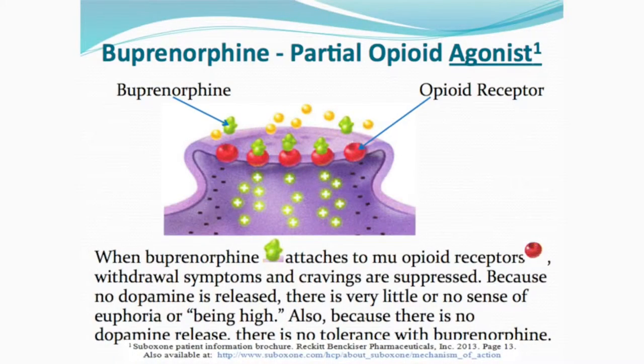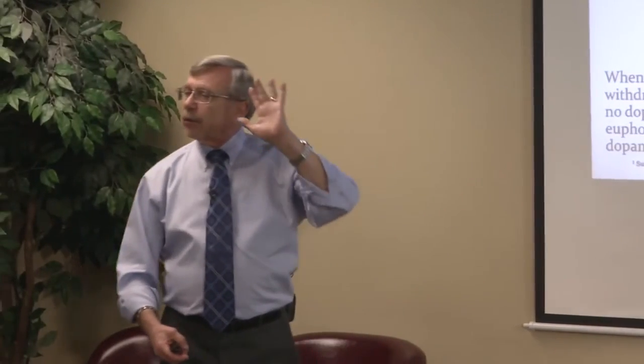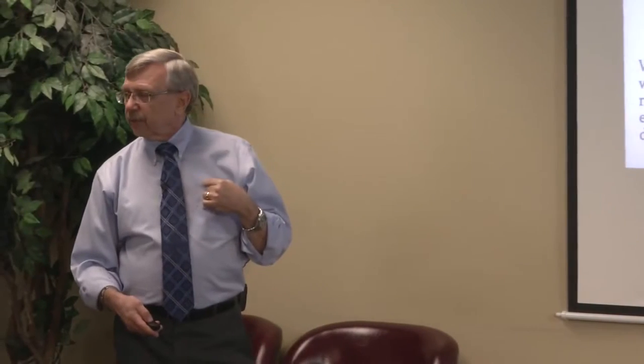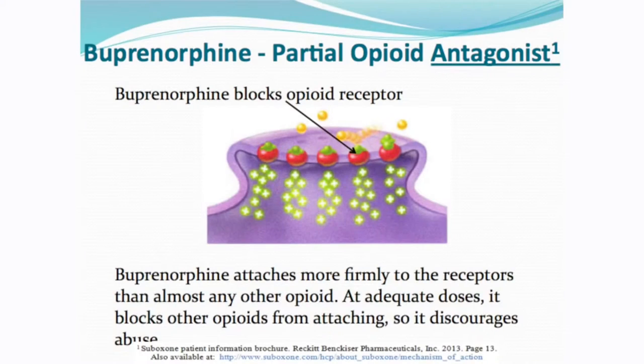Because there's no dopamine release, there's no tolerance with buprenorphine. Tolerance develops by beating the dopamine system — depleting dopamine stores and shutting down receptors. With suboxone or buprenorphine, the dose at year three is often the same as month three, sometimes even lower — that's reverse tolerance. Buprenorphine is also a partial antagonist, meaning it attaches more firmly to the receptor than almost any other opioid, and at adequate doses it blocks other opioids from attaching, discouraging abuse.